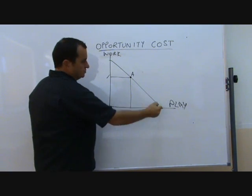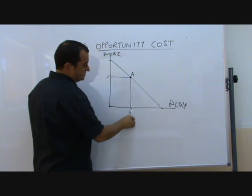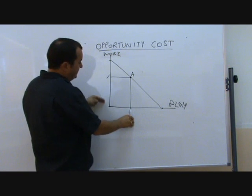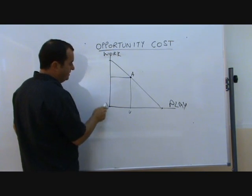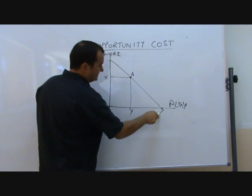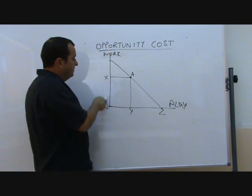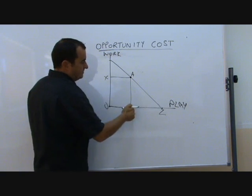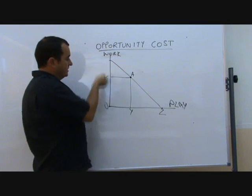They've decided not to use all their time for play. They've decided to sacrifice this much time for play so they can have some time for work. In other words, the opportunity cost of OX of work is YZ of play. By deciding to work for OX hours, they must give up that much play. This is the opportunity cost of working OX.